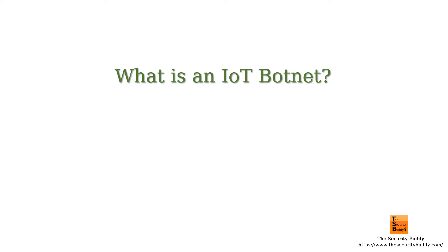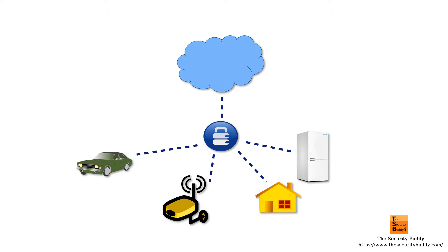In our previous video we learned what a botnet is and how it works. In this video we would try to understand what an IoT botnet is. IoT, or Internet of Things, is a system of interrelated devices such that each device has a unique identifier and the devices can transfer data over a network without any human-to-human or human-to-computer interaction.